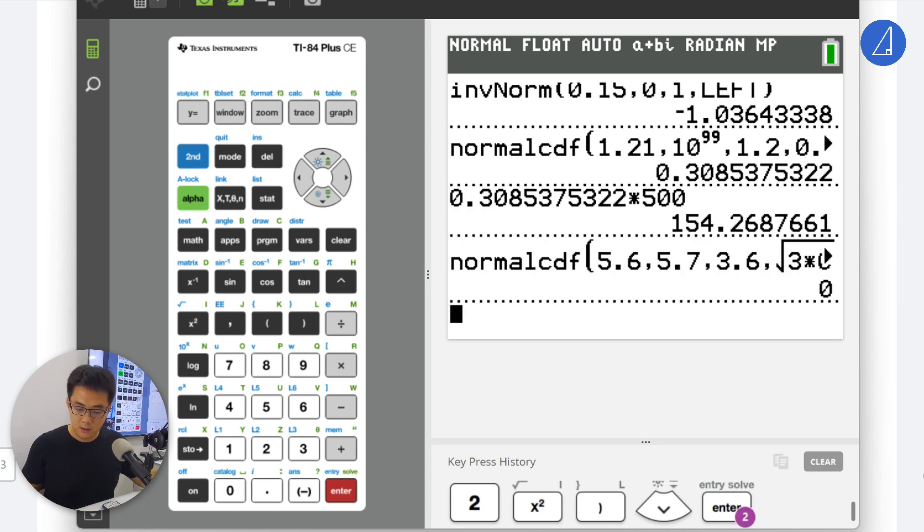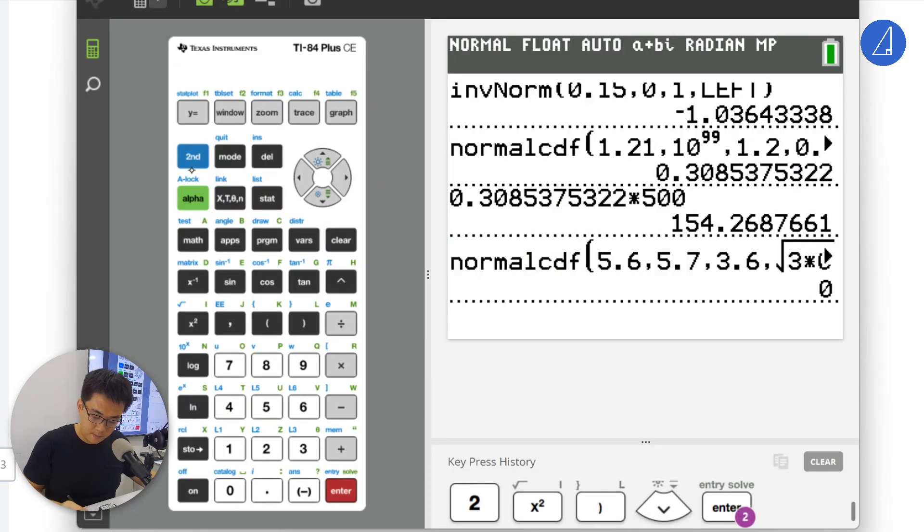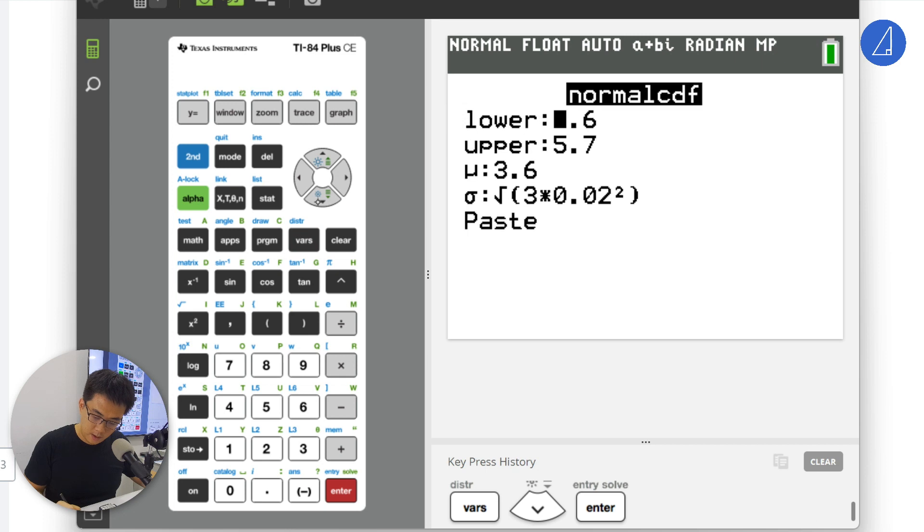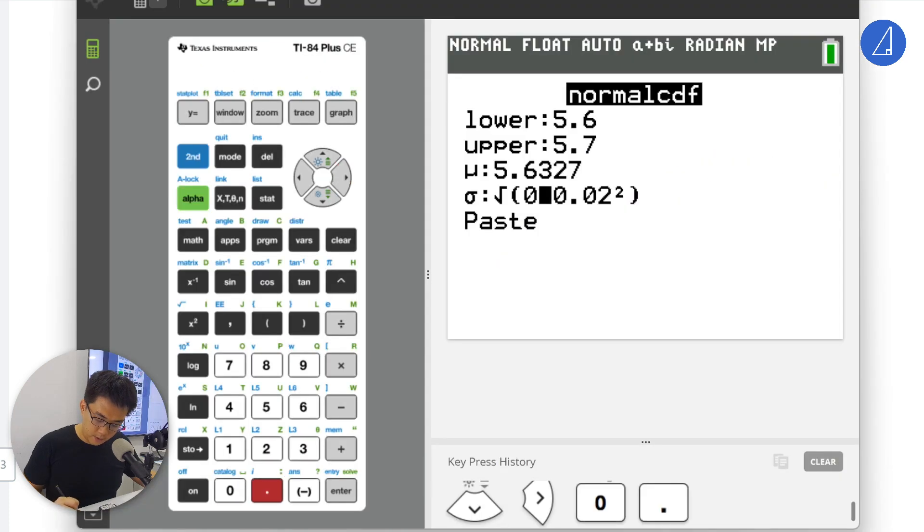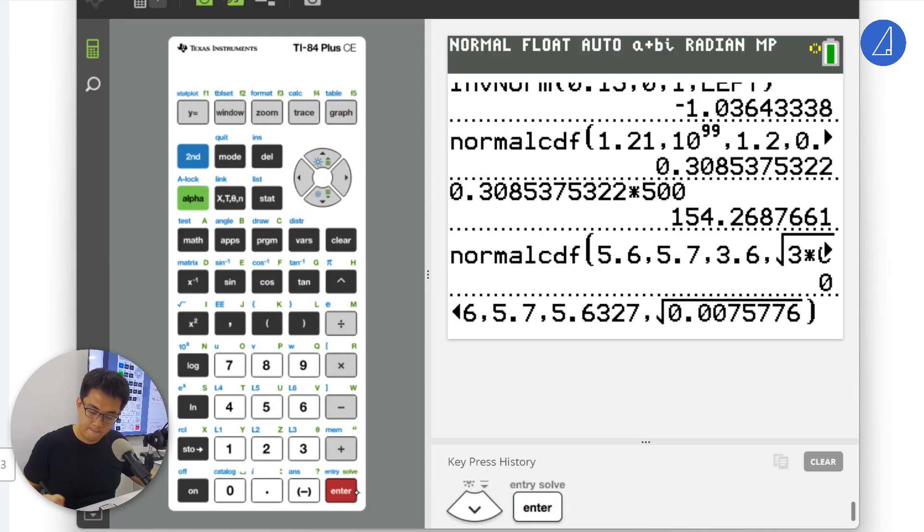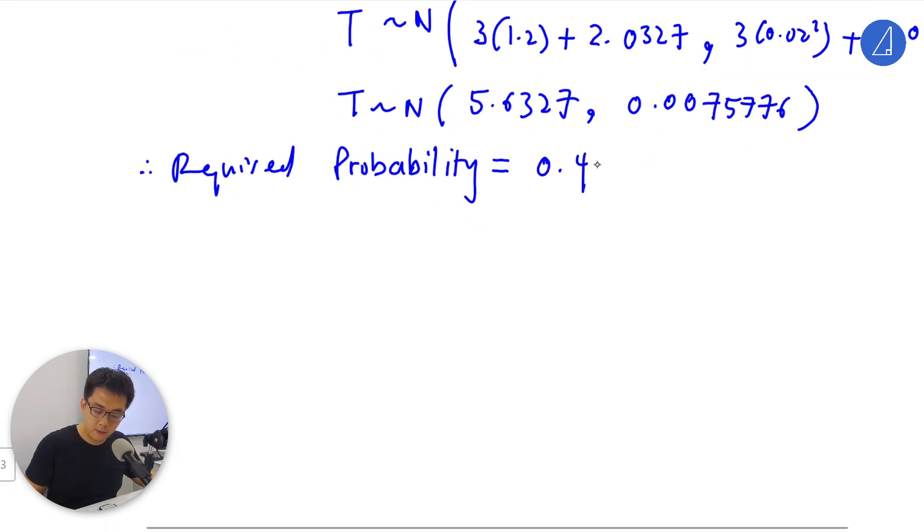If you calculated wrong, it shouldn't be 0. I read the question wrong: one seed and three randomly chosen legs. Let me edit this part. Key in calculator: normal CDF, mu is 5.6327, square root of 0.007577. This gives 0.42668, so the answer is 0.427.